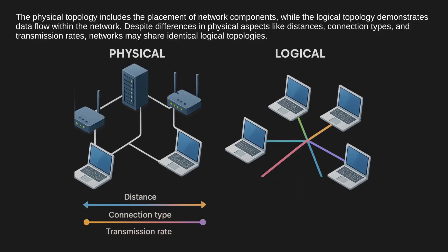The physical topology includes the placement of network components, while the logical topology demonstrates data flow within the network. Despite differences in physical aspects like distances, connection types, and transmission rates, networks may share identical logical topologies.